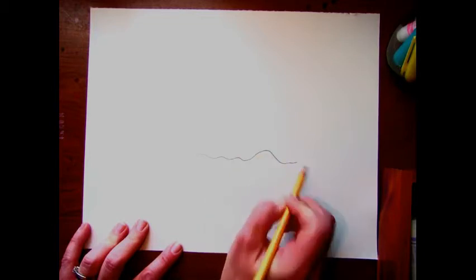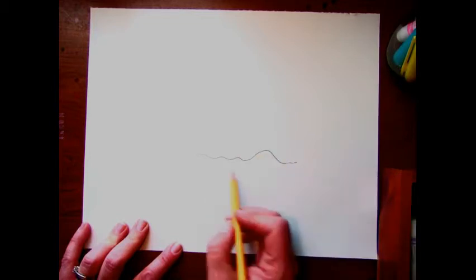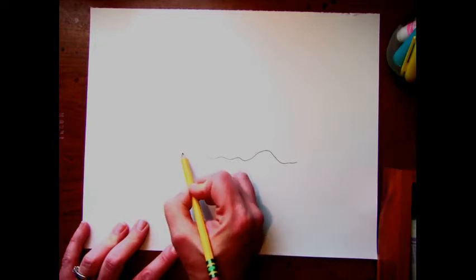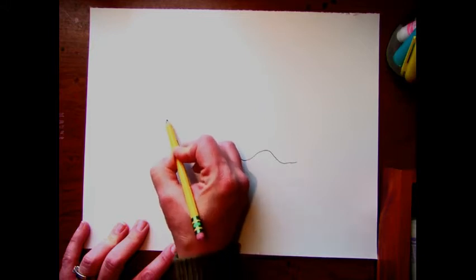I'm going to start drawing my ship by making a wavy line. That's where the water hits the bottom of the ship. Then I'm going to do a diagonal line for the front of the ship and more of a straight line for the back of the ship.